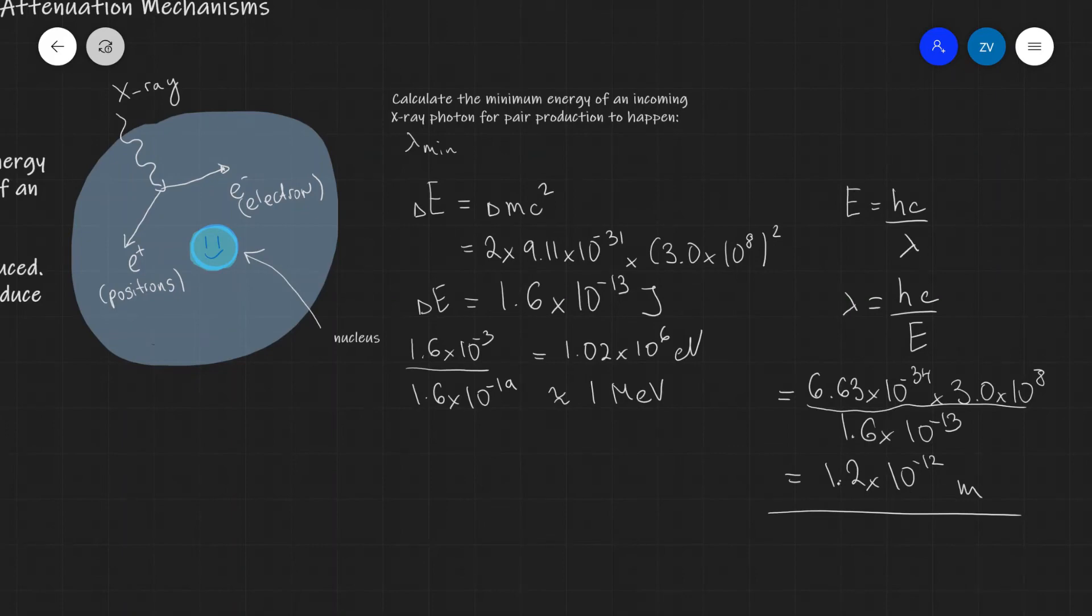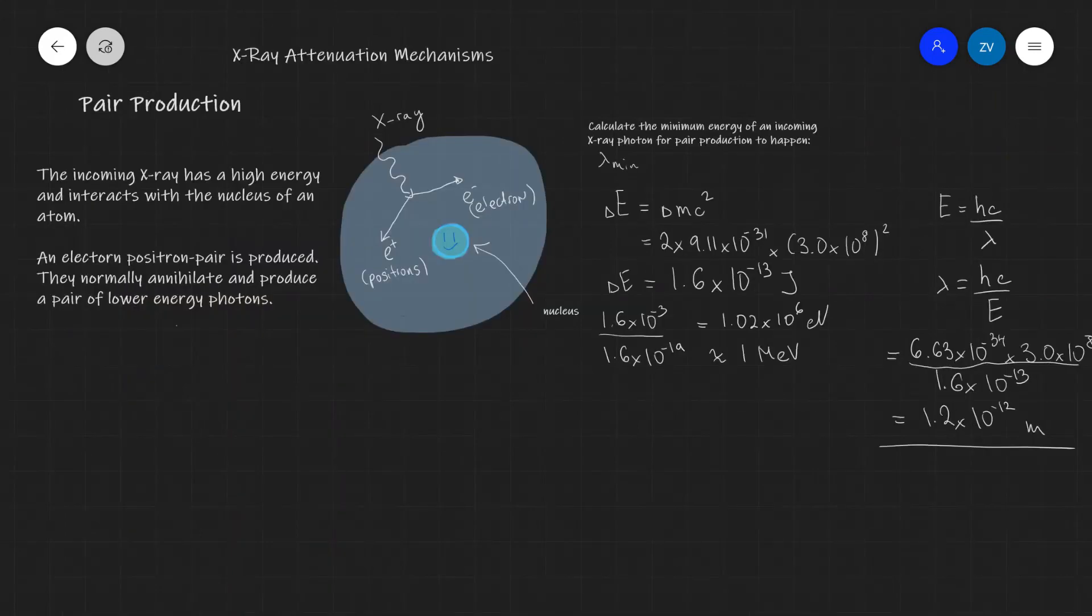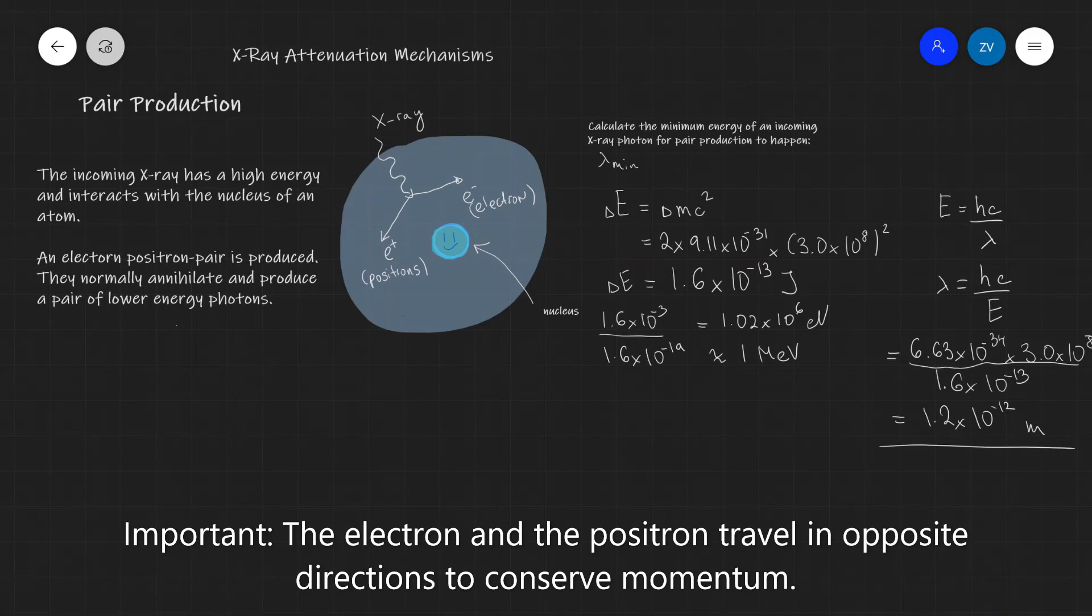If we wanted to, we could calculate the wavelength of the photons that are going to be emitted after the electrons and the positrons have interacted. That's just going to be half of that value because they're going to have half the energy each. One final really important aspect that we need to consider is that both energy and momentum are conserved in this interaction.